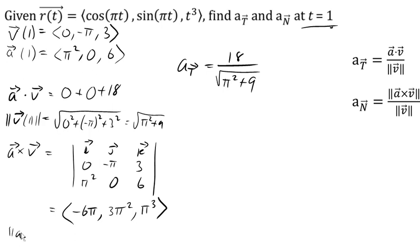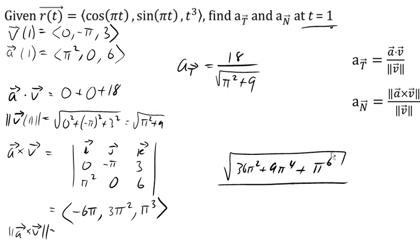Which will be, let's see, it'll be the square root of 36 pi squared. That's squaring the first component there. 9 pi to the fourth for the second component. And pi to the sixth for the third one. That divided by the magnitude of v, which we found earlier, gives us the normal component of the acceleration.